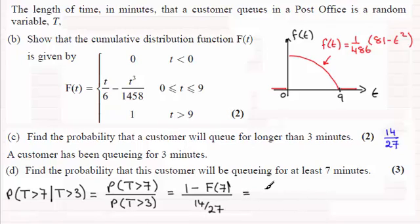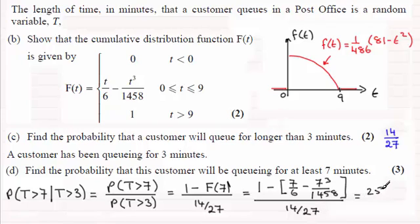So if you do one minus F of seven, that's one minus, and we substitute seven into here, that's going to be seven sixths minus seven cubed all divided by 1458. And that is then divided by 14 over 27. That comes to 25 over 189.